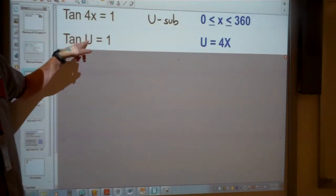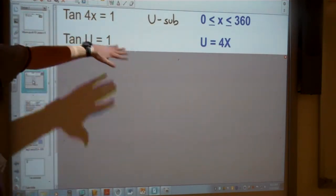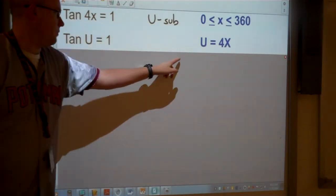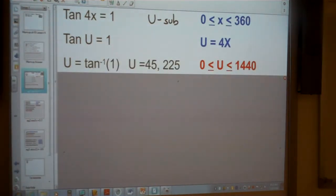So in other words, what I said here is, let U equal 4x, and then I'm going to solve this question. So to solve this question, inverse tan of 1, and we get 45 degrees, and if we add on 180 to that, then we get 225 degrees.